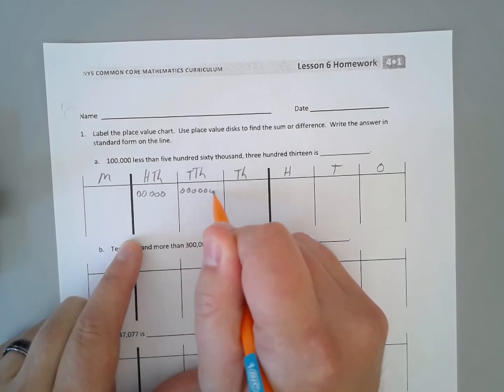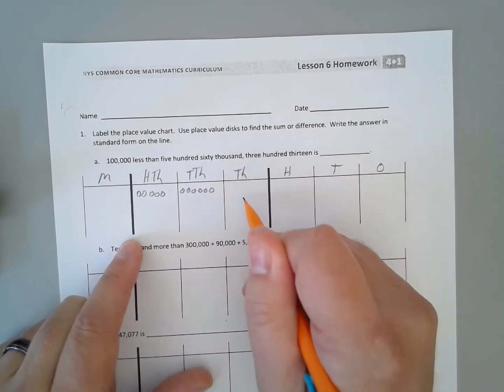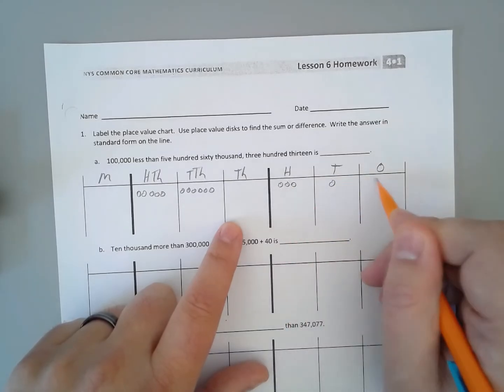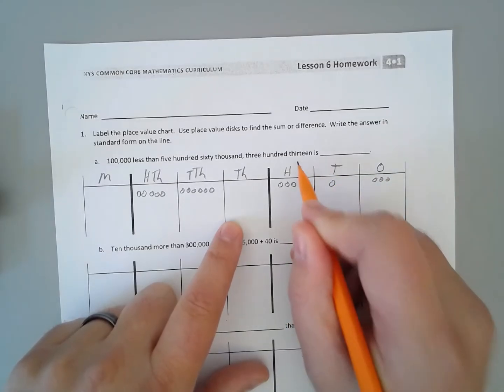1, 2, 3, 4, 5, 6. And then nothing in the thousands. Three hundreds, one tens, and three ones for 13.